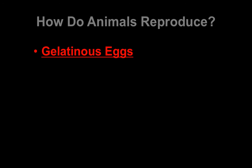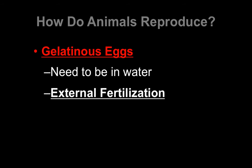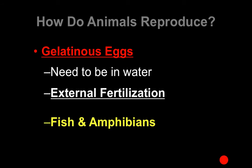We're going to look at animal reproduction and how it has advanced. Starting with organisms that lay gelatinous eggs — meaning they're kind of jelly-like — these ones have to be in the water and use external fertilization. These are things like fish and amphibians. A female fish will deposit a bunch of eggs on the bottom of the river, and then the male fish will simply deposit sperm right on top of those — that's the external fertilization part.